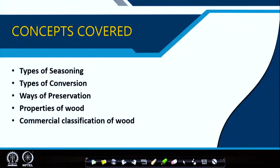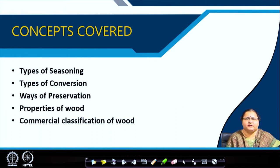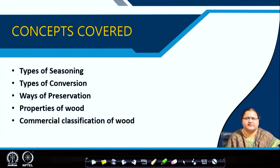We will cover types of seasoning, as seasoning is required very much because wood is a natural material that needs to be seasoned or weathered — kept exposed to the weather. We will look into different types of seasoning, then how to convert seasoned wood to a usable form. We will also cover different ways of preservation, as wood is an organic material mainly comprising cellulose, which is attacked by termites, white ants, and various other organic growths. Then we will go into properties and commercial classification before moving to lecture 3.